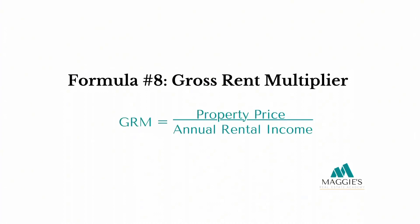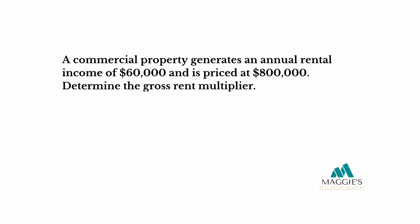Formula number eight: gross rent multiplier. Property price divided by annual rental income equals gross rent multiplier. A commercial property generates an annual rental income of $60,000 and is priced at $800,000. Determine the gross rent multiplier — divide $800,000 by $60,000 and that gives us a gross rent multiplier of 13.33. I'll link a video below for more gross rent multiplier examples.